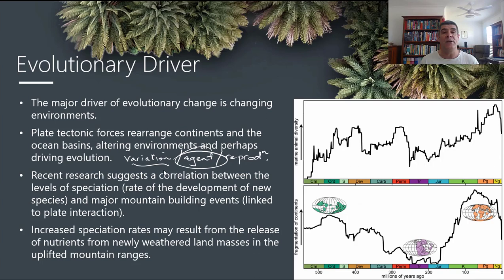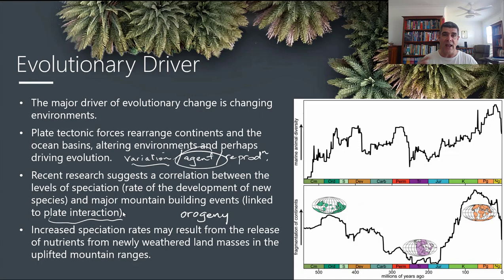Recent research suggests a correlation between levels of speciation — the rate of development of new species — and major mountain-building events. Those major mountain-building events, or orogeny, are linked to plate interactions: cycles of continents coming back together, then fragmenting and moving apart. Now, one important thing to mention is the difference between correlation and causation. Correlation means there's a mathematical relationship between two things — if one goes up, the other goes up or down — but it doesn't necessarily mean one is causing the other.